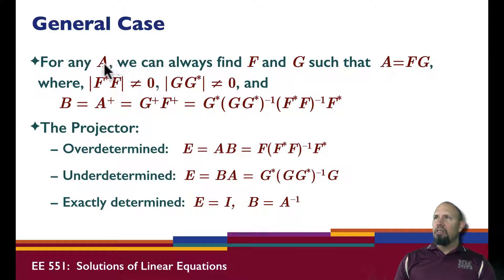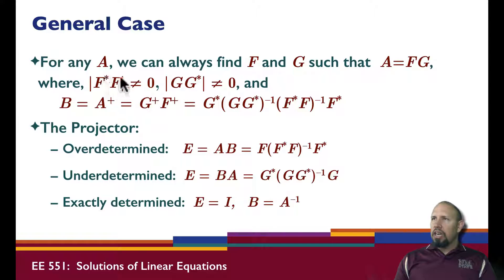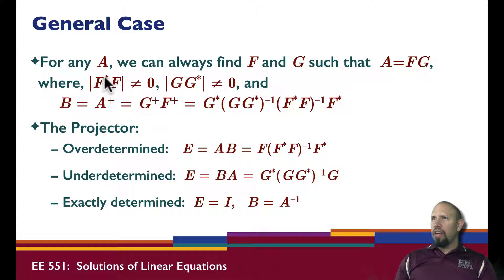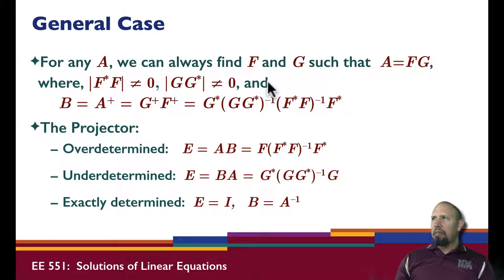In the general case, for any A, we can always factor it: A = FG, where F has full column rank (F-adjoint F is non-singular) and G has full row rank (G G-adjoint is non-singular). F will generally be tall and thin, G will be short and fat. We're getting the compact square of that matrix. B, the solution map, can always be chosen as the pseudo-inverse of A, which equals the pseudo-inverse of G times the pseudo-inverse of F.